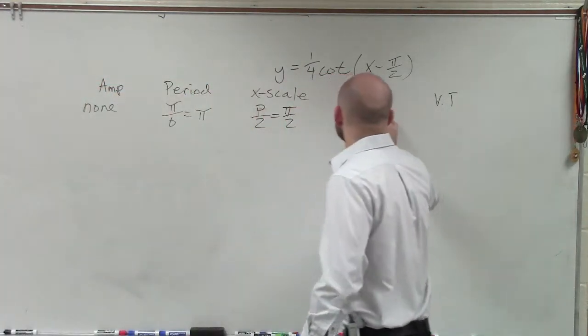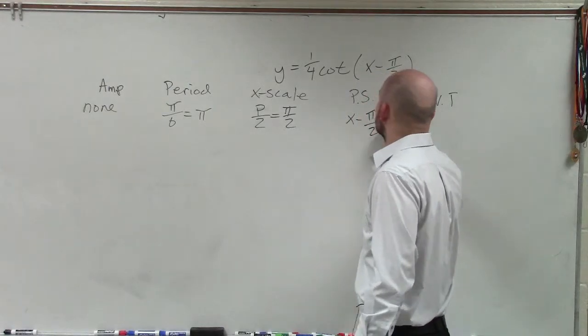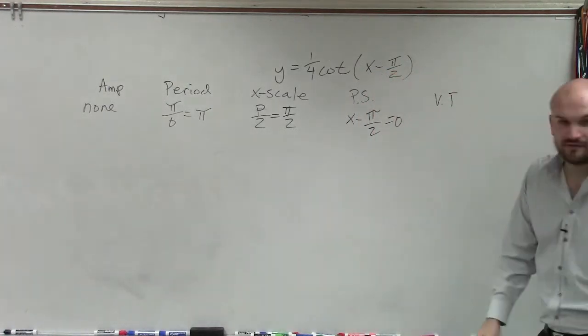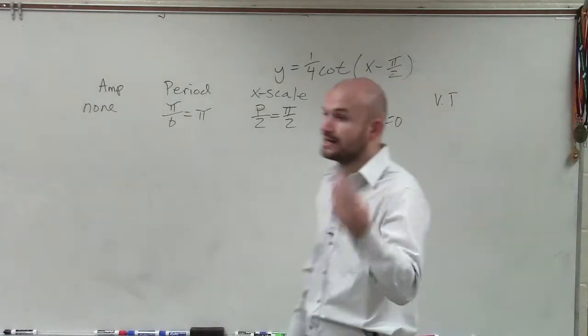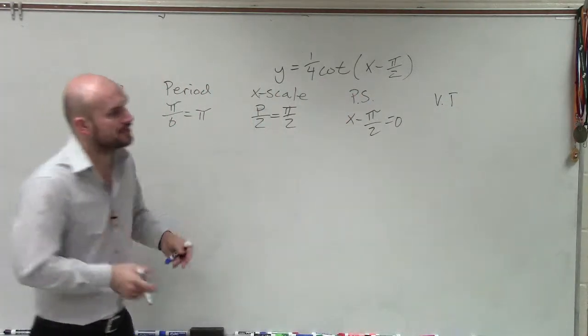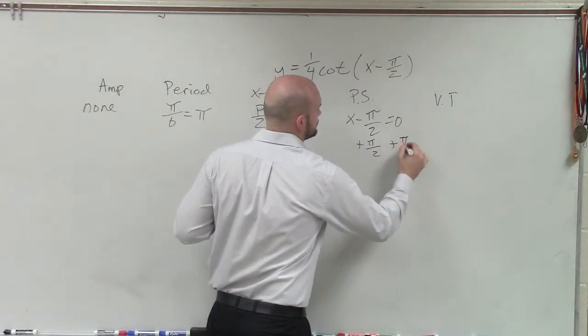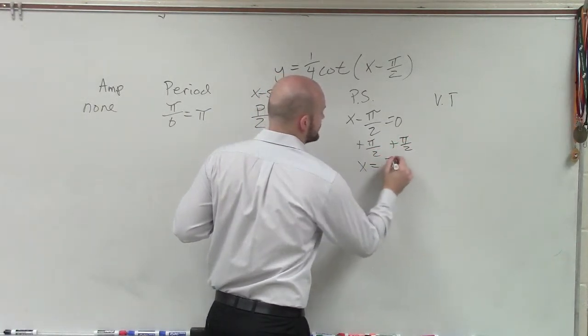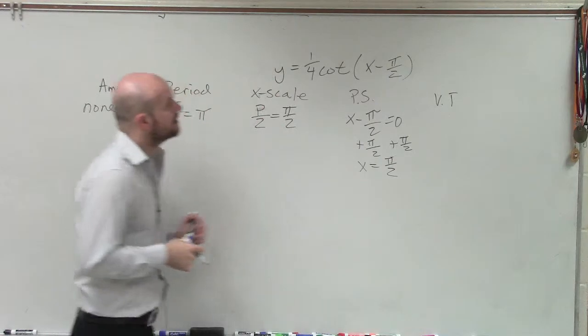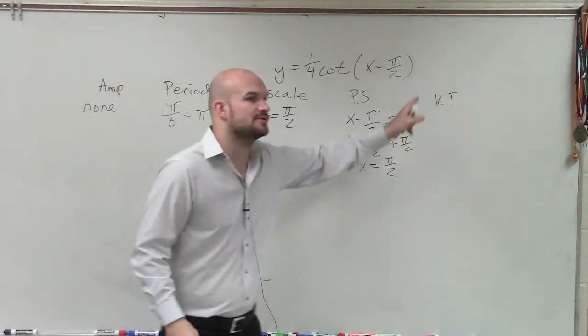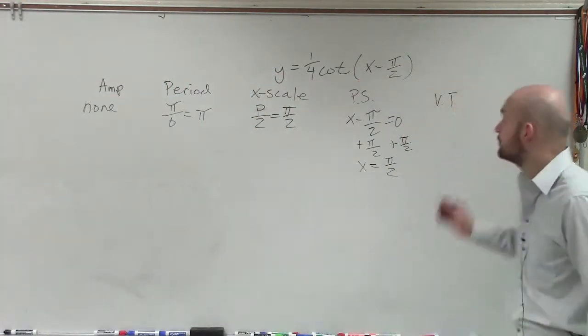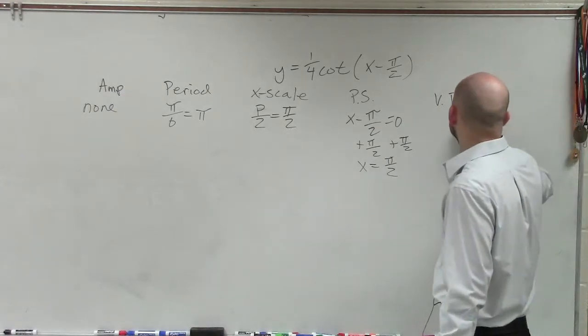Our phase shift, remember, this is where we're going to tell us where to start our graph, even though these graphs continue on and on forever. Remember, when we just want to graph one period, we're going to start with our phase shift. So I set that equal to 0, and I could say x equals π halves. And then our vertical translation is what we're going to be doing to adding and subtracting. So therefore, we're going to add and subtract 0.